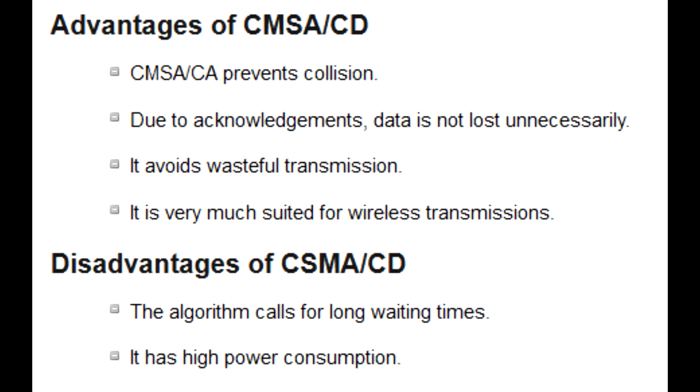The CSMA/CA process works as follows: when a frame is ready, the transmitting station checks whether the channel is idle or busy. If the channel is busy, the station waits until the channel becomes idle. If the channel is idle, the station waits for an inter-frame gap (IFG) amount of time and then sends the frame. After sending, it sets a timer and waits for acknowledgement from the receiver.